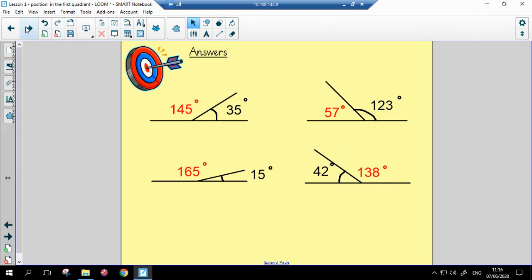So, here are your answers. To be able to do these sorts of questions, you must remember there are 180 degrees on a straight line. To find a missing angle, you need to subtract the given angle from 180, and then you'll get the answer.